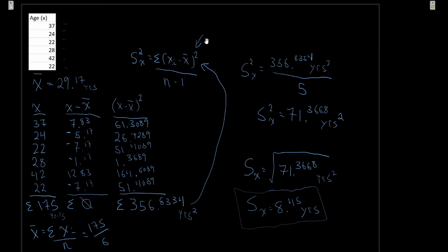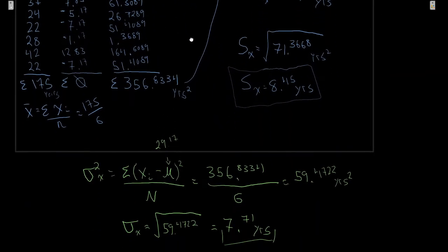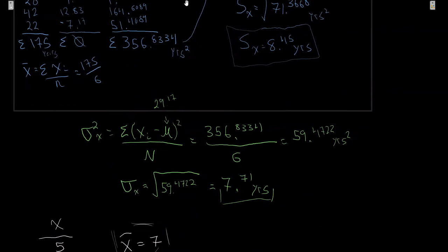That's the idea behind n minus one. Being that this is a business statistics course, the real outcome is: can you use the right formula in the right place and calculate the right number? That's just background for those wondering why. Our primary measures of dispersion are variance and standard deviation. In the next section, we'll look at how we use these and some neat things we can take away from them.